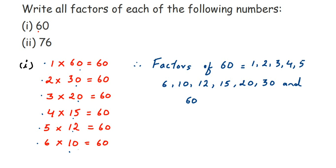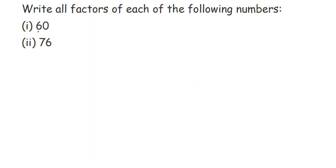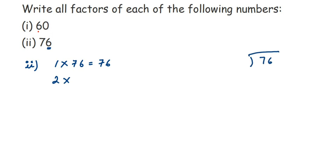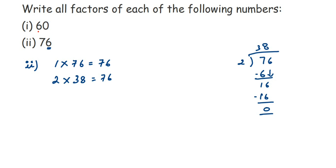Now we're going to do the same thing for 76 — check tables from 1 to 10. Starting with the 1 table: 1 into 76 is equal to 76. Then the 2 table: it goes because the number ends with 6. Any number ending with 2, 4, 6, 8, or 0 goes in the 2 table. Dividing 76 by 2: 2 threes are 6, remainder 1, drop the 6, 2 eights are 16, remainder 0. So 2 into 38 is equal to 76.